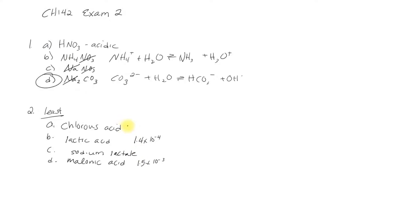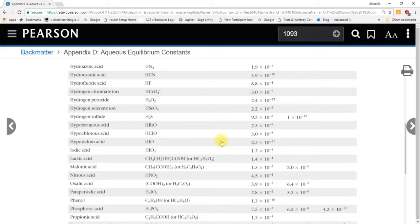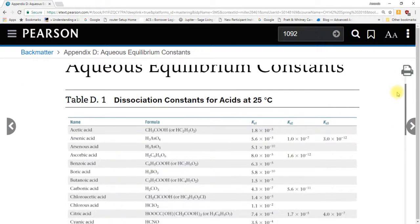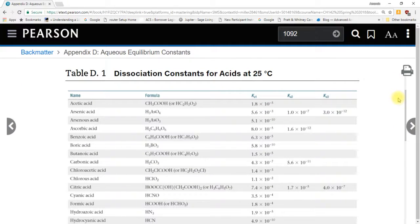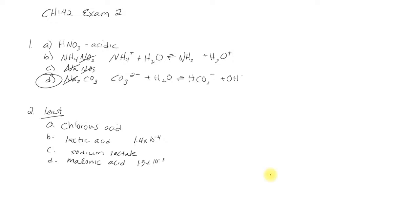Chlorous acid is probably up higher. It's 1.1 times 10 to the -2. Now, the last one isn't an acid. It doesn't have the word acid in it, so I'm not going to find it in the first page of appendix D.